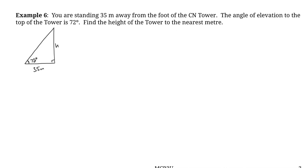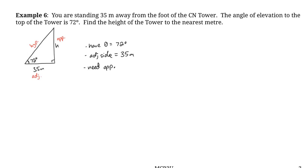Label the sides: the hypotenuse is across from the right angle, the adjacent side is 35 meters, and the opposite side is the height we need to find. We know the angle (72°) and the adjacent side (35 m), and we need the opposite — so we use the tangent ratio. Tan(72°) = opposite over adjacent.